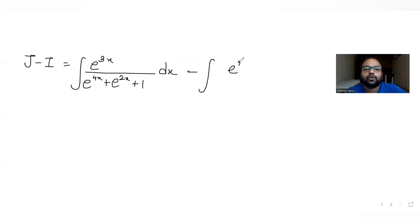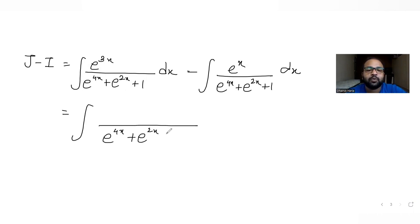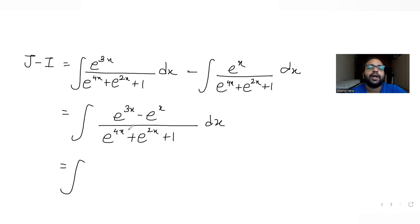So finding the difference J minus I gives: integral of (e raised to 3x minus e raised to x) upon (e raised to 4x plus e raised to 2x plus 1) dx. I can take the numerator together, and then take out e raised to x common, leaving e raised to 2x minus 1 in the numerator.